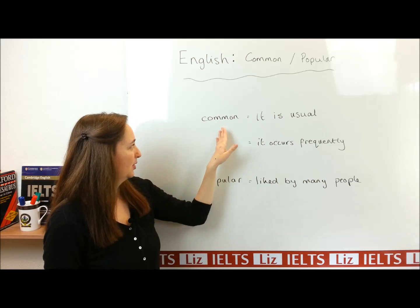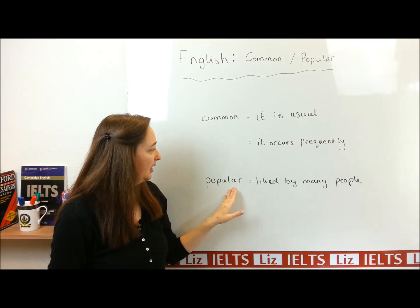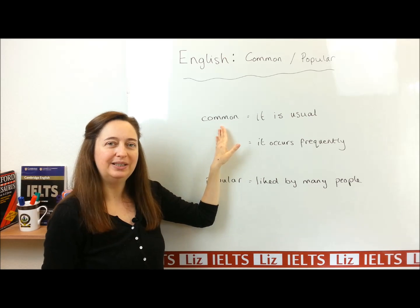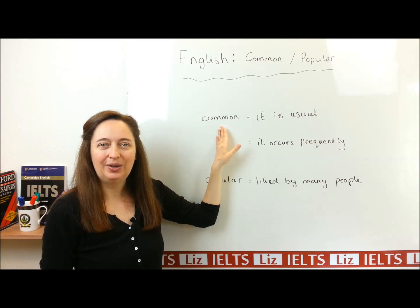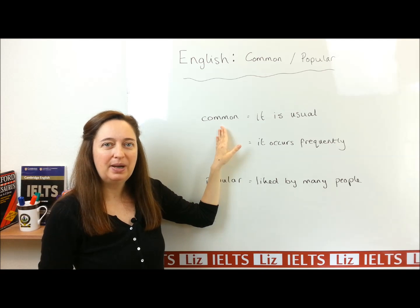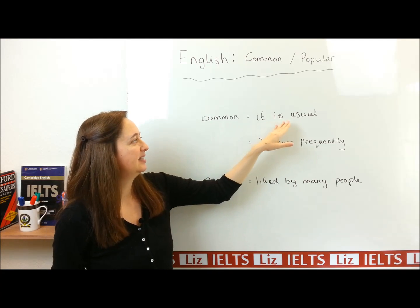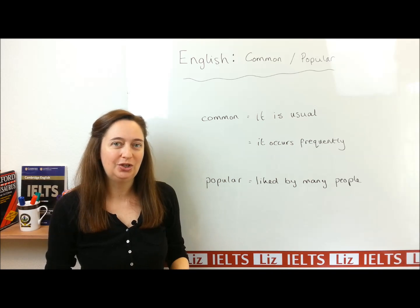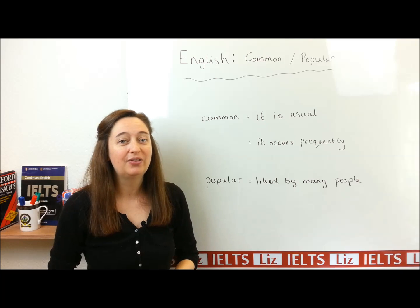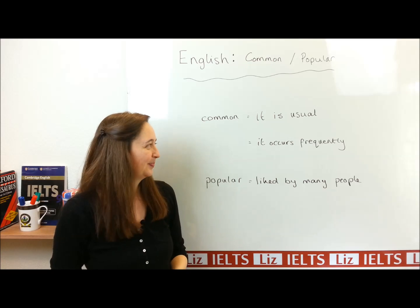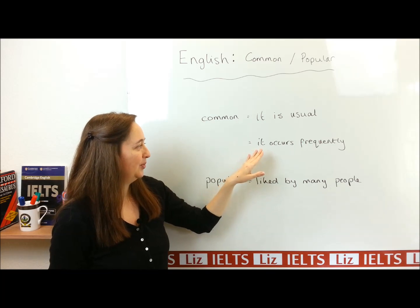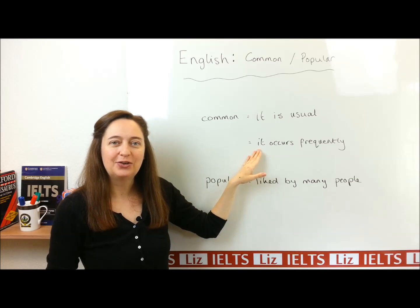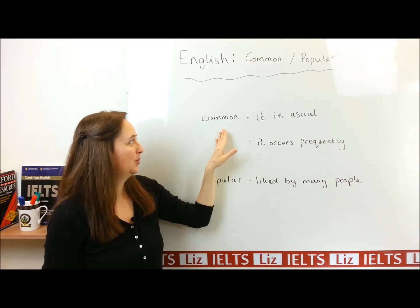Now, what is the difference with common? Well, popular is about liking something — many people liking it. But common is not about liking. It's about if something is usual, which means many people have it or do it. We don't know if they like it. It's also used when something happens often, when it occurs frequently. We use the word common.